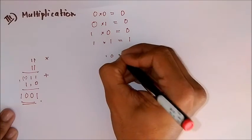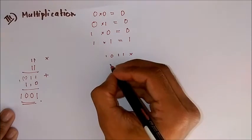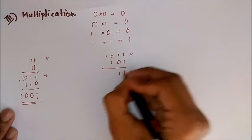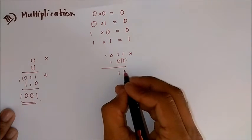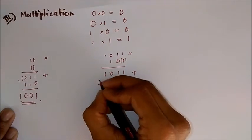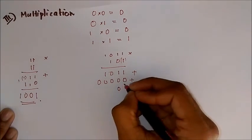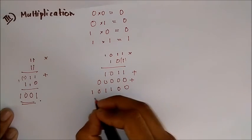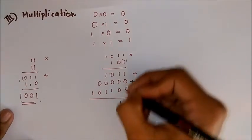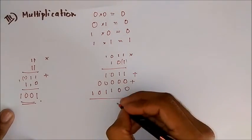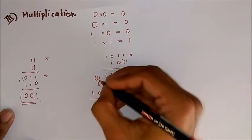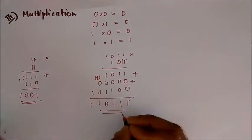Let's consider one more example. Let it be 1011 into 101. First we multiply each place with the number like ordinary multiplication. Now we just add: 1 plus 0 is 1; 0 plus 1 is again 1; here 1 plus 1 gives 0 with a carry of 1; this gives 1; and this is our final answer.